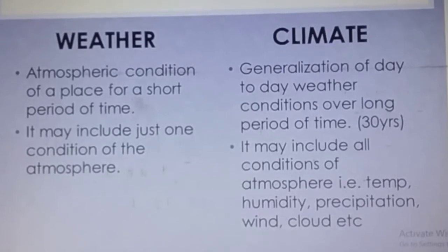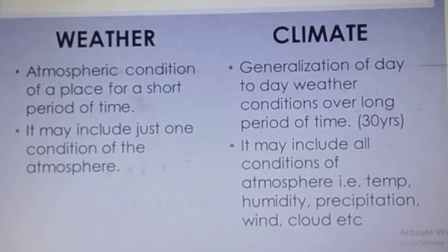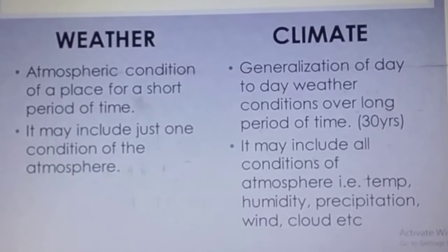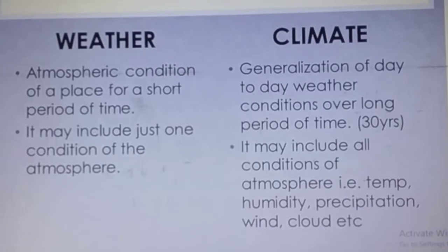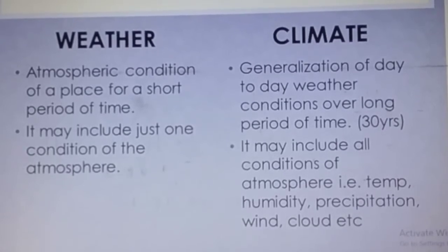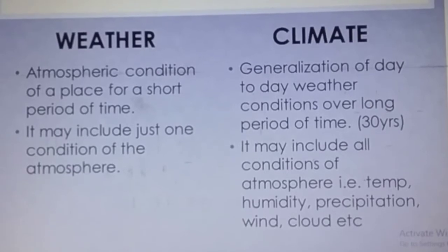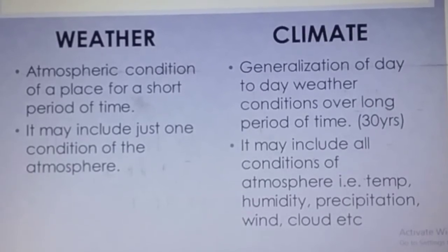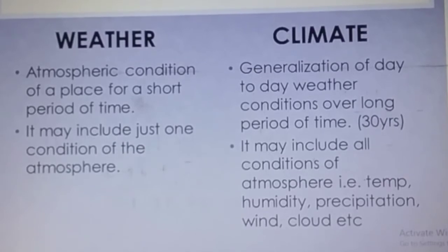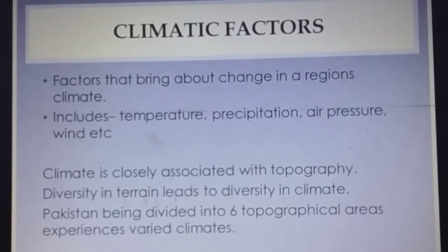Weather covers a very short period of time — daily, how is the weather today? Is it sunny, rainy, cloudy? It may include just one condition of the atmosphere. Climate, on the other hand, is the generalization of day-to-day weather conditions over approximately 30 years, and it may include all atmospheric conditions: temperature, humidity, precipitation levels — which means rainfall — wind, cloud, etc.